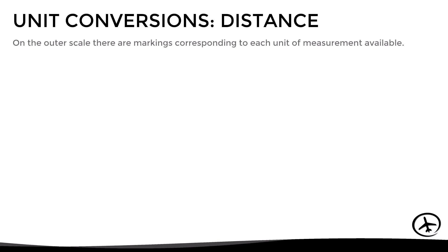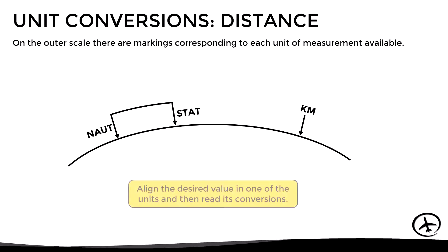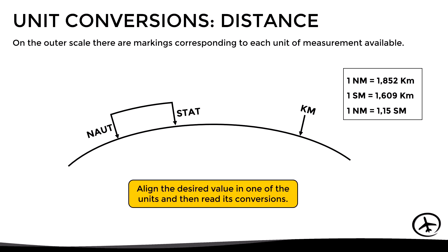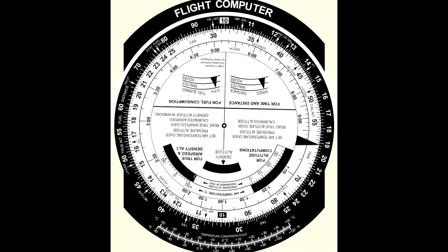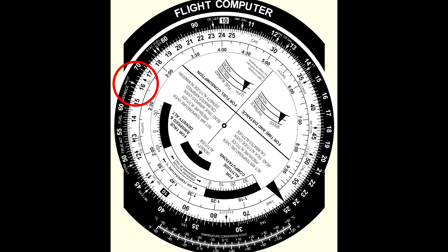For distance unit conversions, the outer scale has markings for nautical miles, statute miles, and kilometers. To convert, align the desired value with its corresponding unit marking and read the values in the other units. Conversion factors can be used to confirm the result. For example, to convert 16 nautical miles, align 16 with the nautical miles arrow and read 18.4 statute miles and 29.6 kilometers.